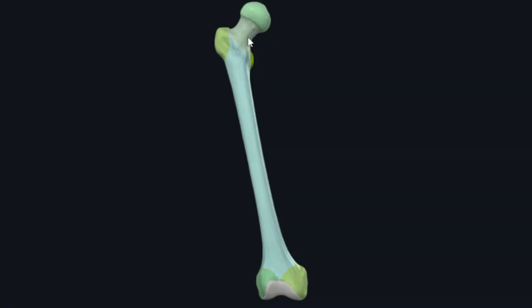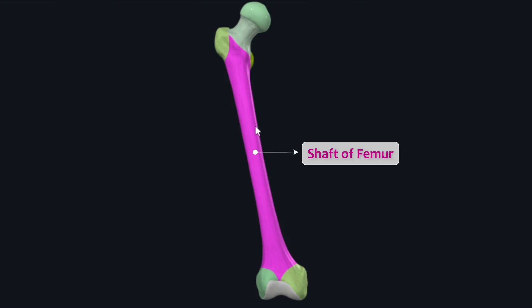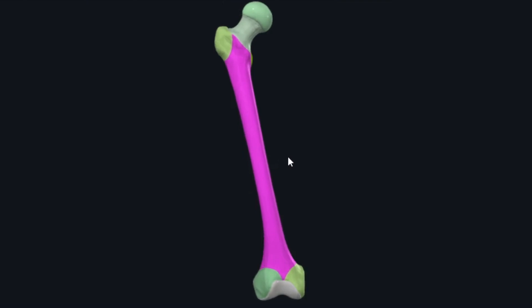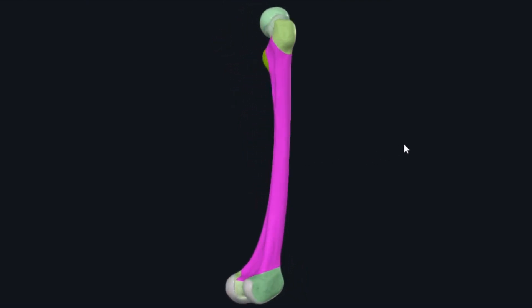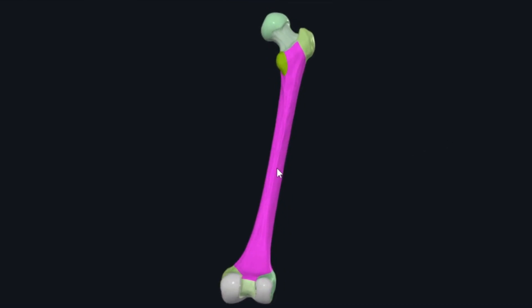Moving downwards, the long tubular part of the bone is the body or shaft of the femur. The shaft is narrowest at its middle area and expands at both its proximal and distal ends. The shaft is smooth and rounded on its anterior surface, but posteriorly there is a roughened ridge called the linea aspera, to which different muscles and intermuscular septa are attached.